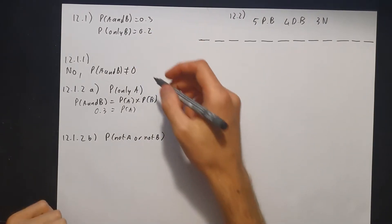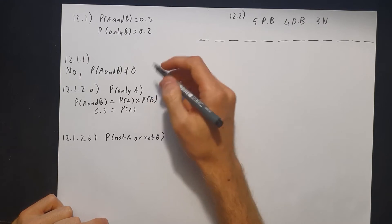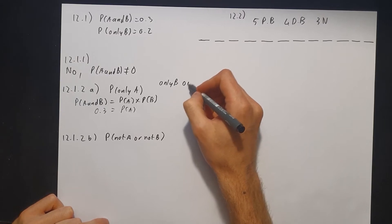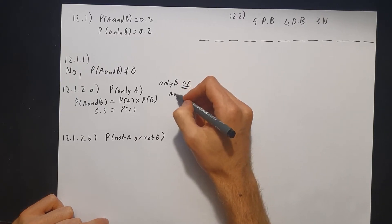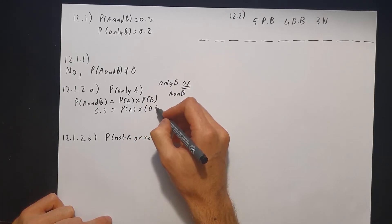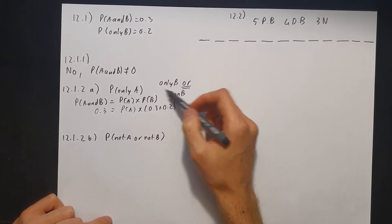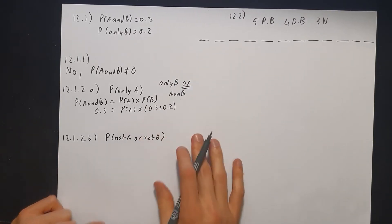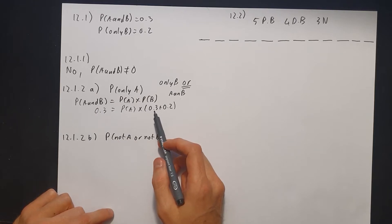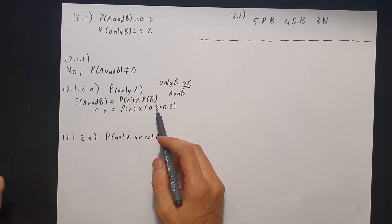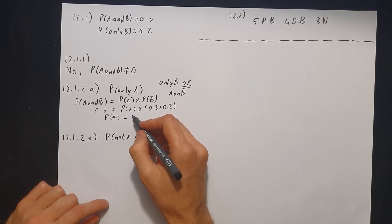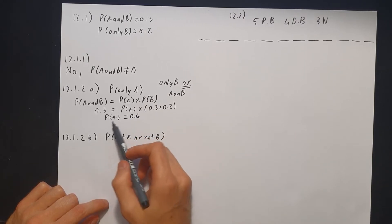Note that we're given only B, so we need to find P(B). We know that B can occur if only B happens, or if A and B happens together. Or means plus, so therefore P(B) equals 0.2 plus 0.3, which is 0.5. Then we have 0.3 divided by 0.5, which gives us the probability of A equals 0.6.